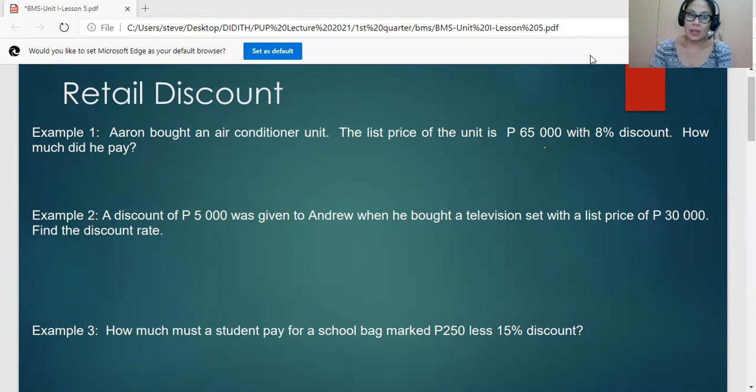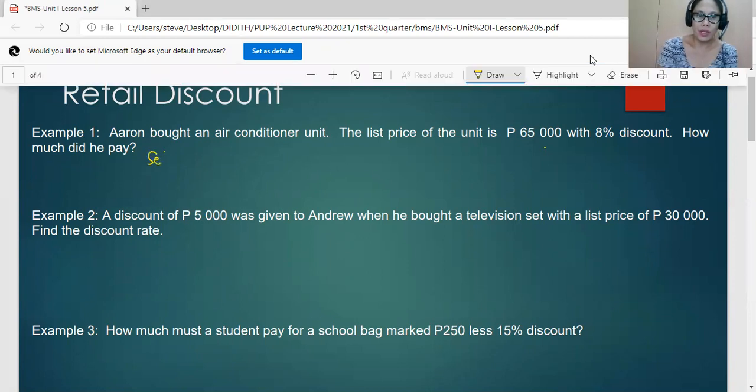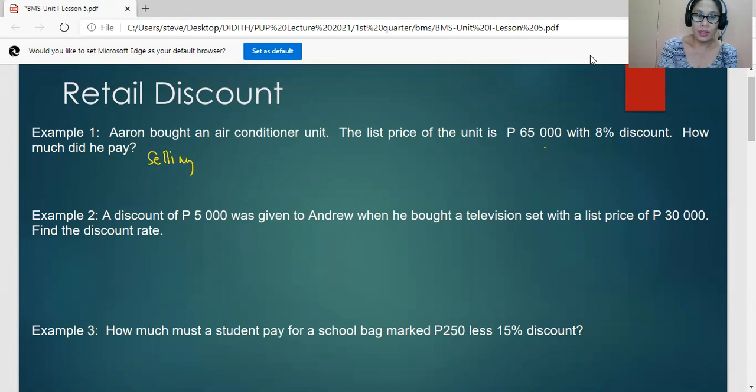For us to understand better retail discount, let's work on these example exercises. For number one, Aaron bought an air conditioner unit. The list price of the unit is 65,000 pesos with 8% discount. How much did he pay? In this problem, we are asked to solve for the selling price or the net price.